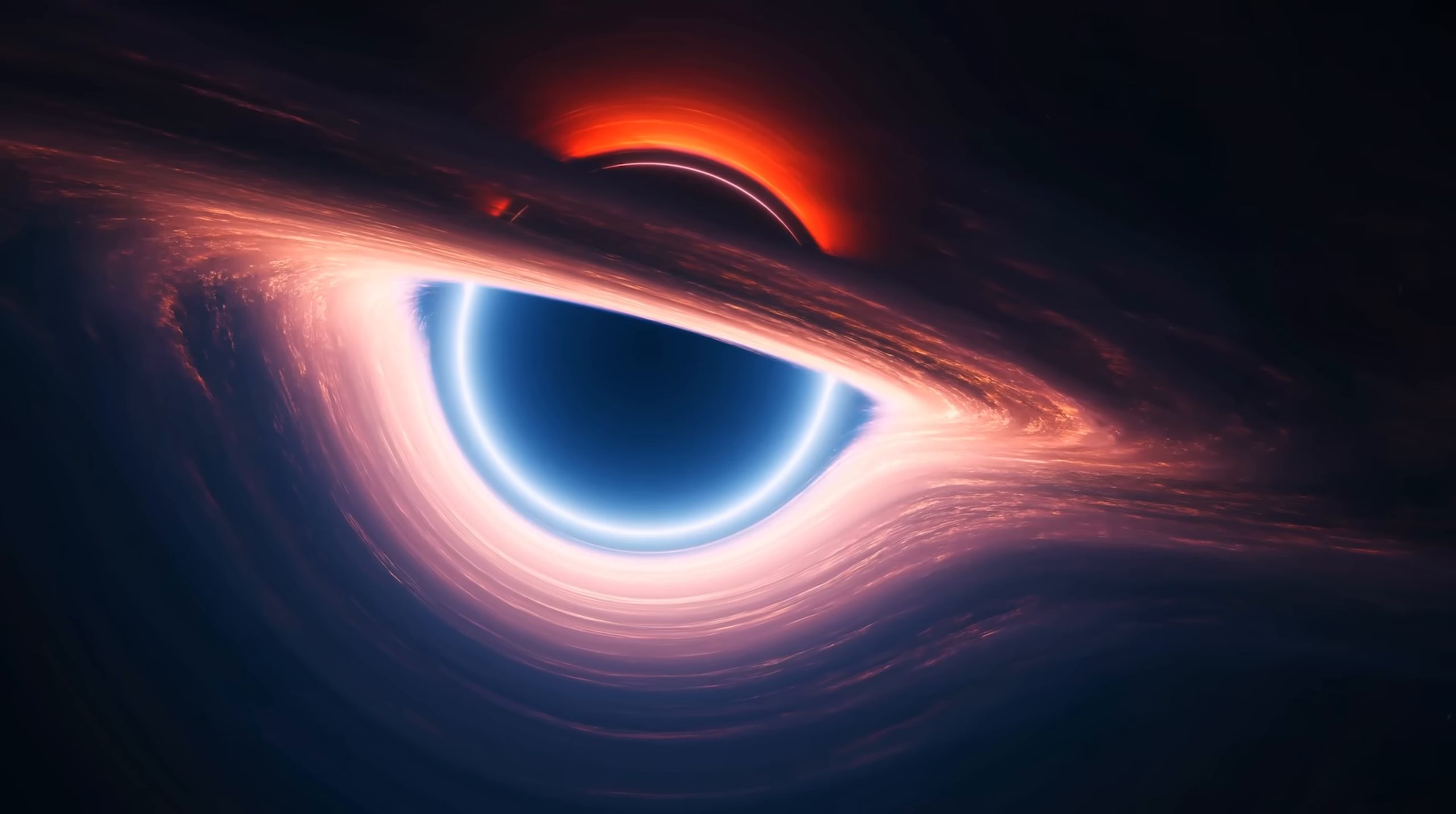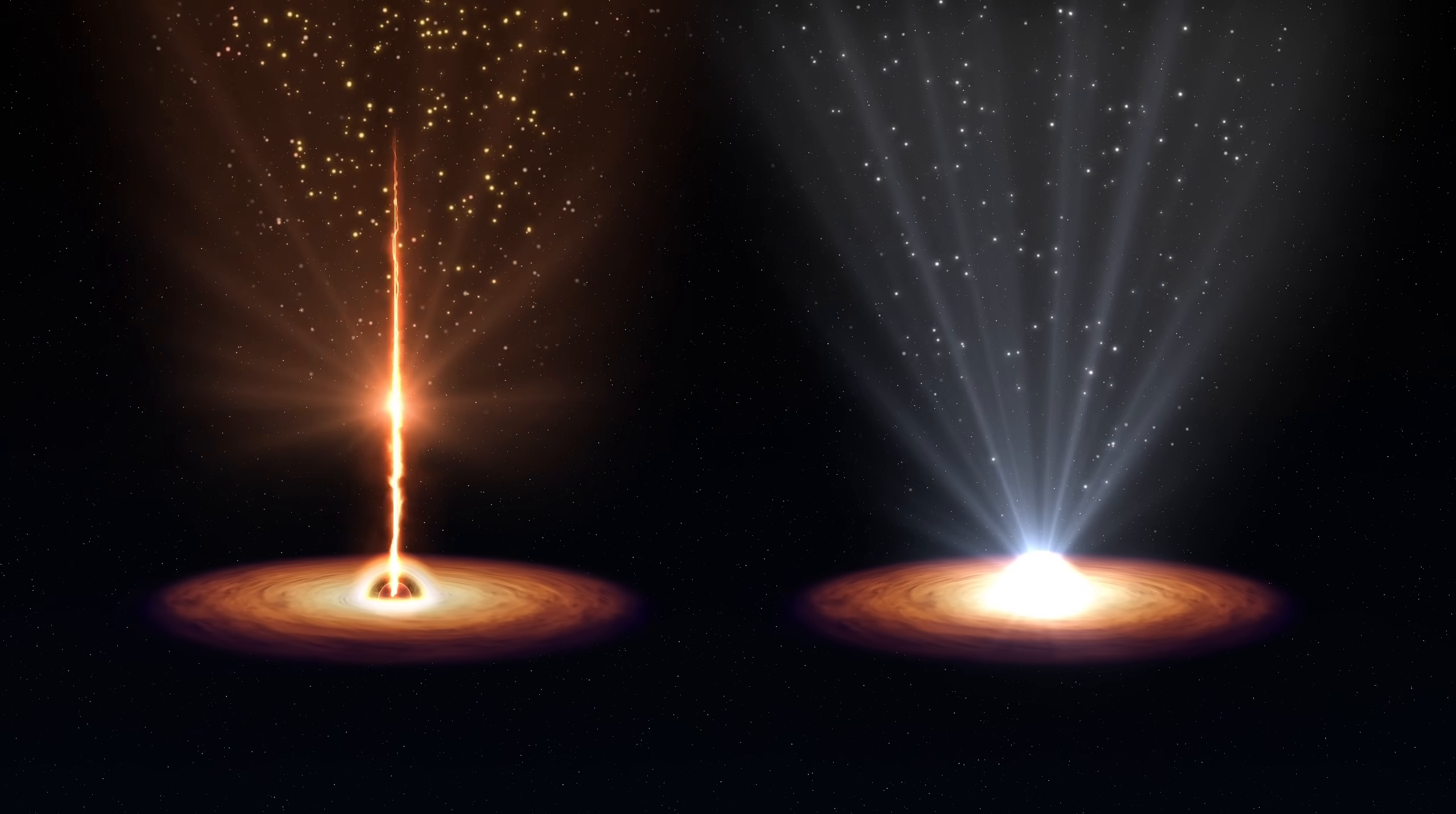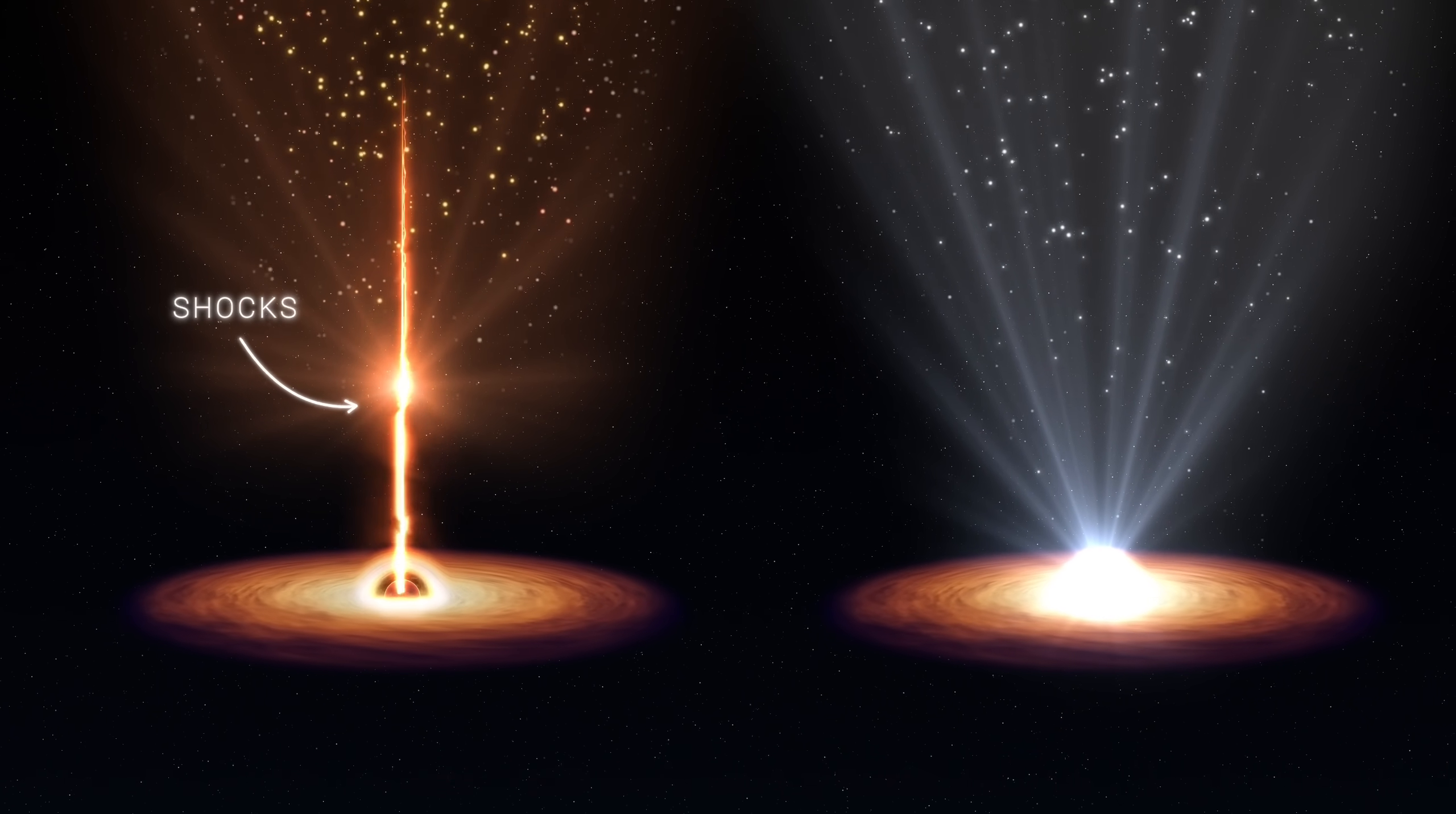The prevailing theory assumed that the energy heating the surrounding dust in the AGN came directly from the supermassive black hole itself. However, the JWST observations revealed something much more intriguing. The energy that heats the dust comes not only from the black hole's intense radiation, but also from violent interactions with jets of gas ejected at near-light speed from the black hole's poles. These jets collide with the surrounding matter, creating what astronomers now call shocks.